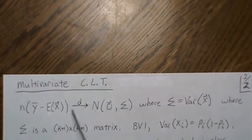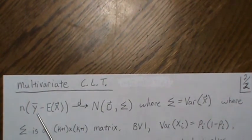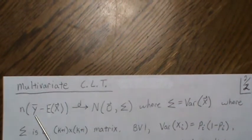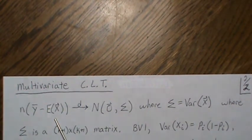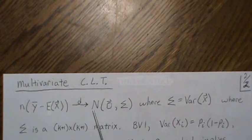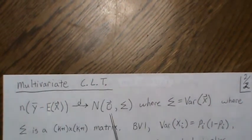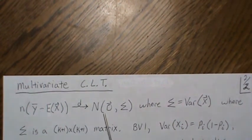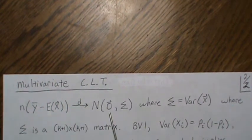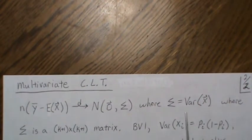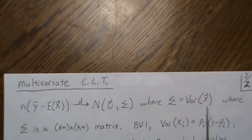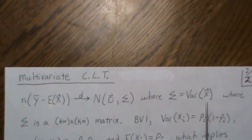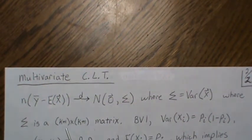So, looking at the mean of the X vectors — Y-bar minus the mean of one of those observations, times √n — that limits in distribution to a multivariate normal distribution with mean vector zero and covariance Σ, where Σ is the variance of one of the X vectors. This creates a K+1 by K+1 covariance matrix.